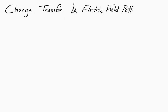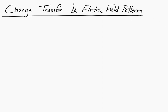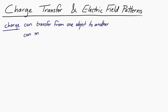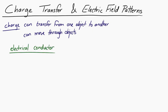Let's take a look at charge transfer and electric field patterns. Charge can transfer from one object to another, and it can move through objects. Before we start thinking about that too much, I want to define two different categories of materials: electrical conductors and electrical insulators.